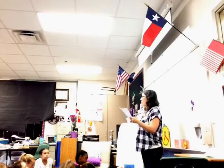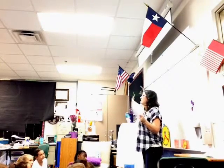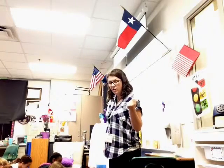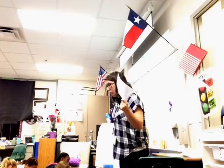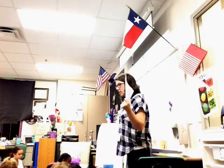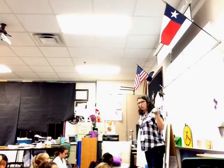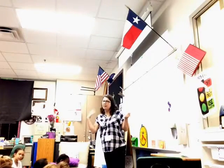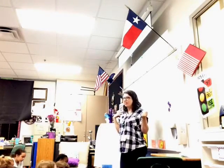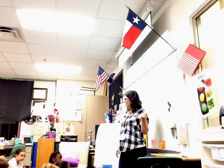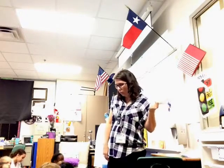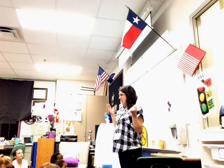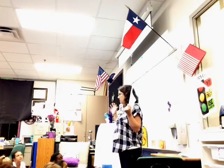Using those same numbers and the same thing — hundreds and hundredths place — now build the smallest number you can. Look at your shoulder partner and see if you have the same number. What number is in our hundreds place? Everyone whisper that to me. Four. Everyone make sure your number has a four in the hundreds place. That's the smallest number we're using, so that would go in our hundreds place. And then it'll go up in order from there — four, five, six. So 456 and seventy-eight hundredths.